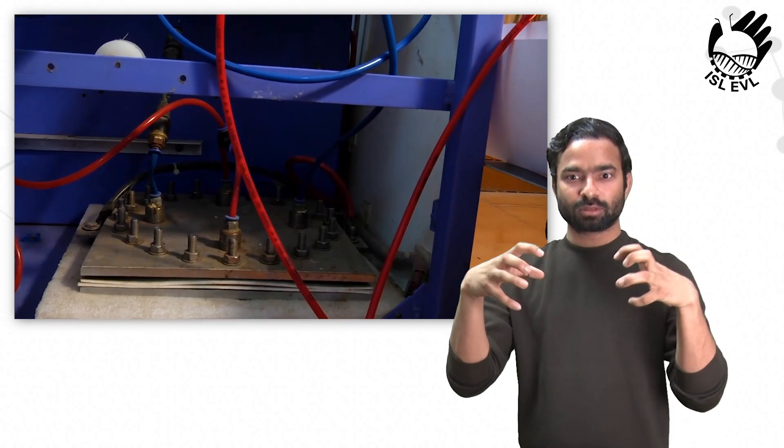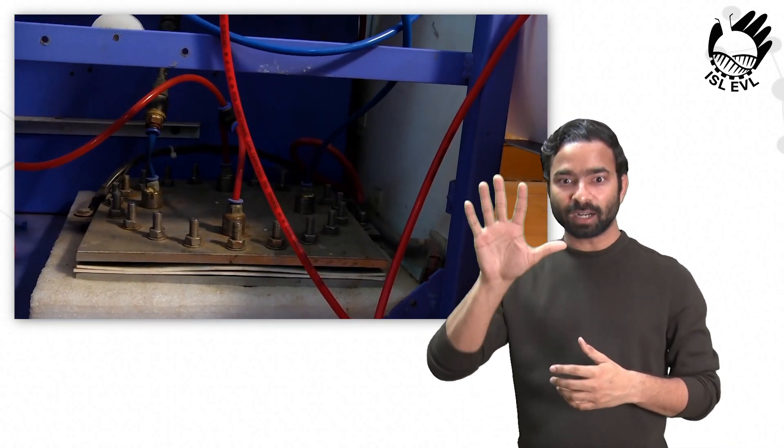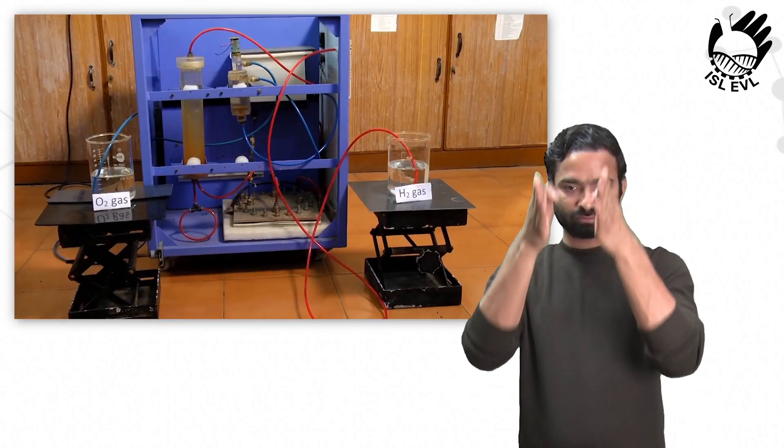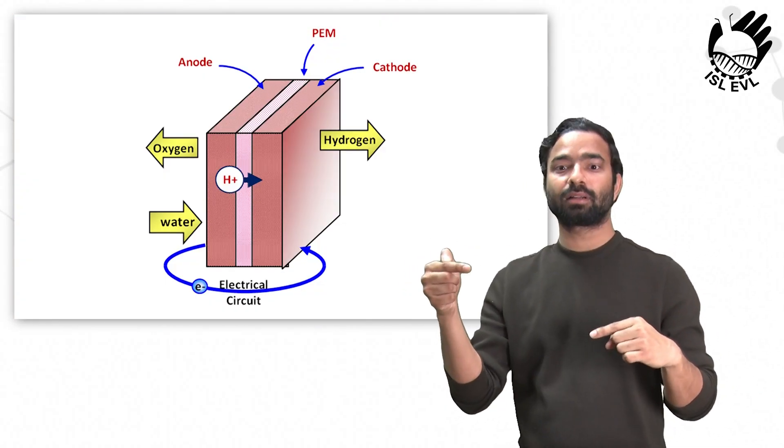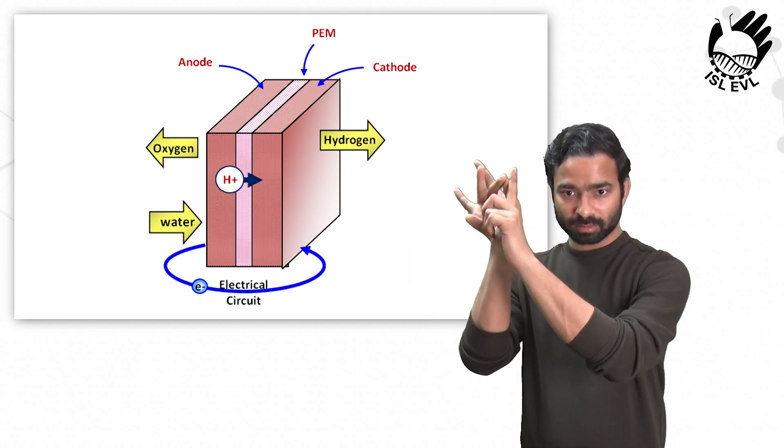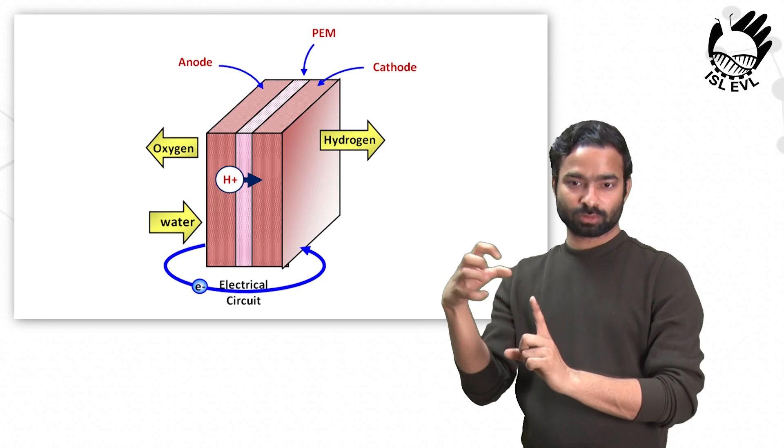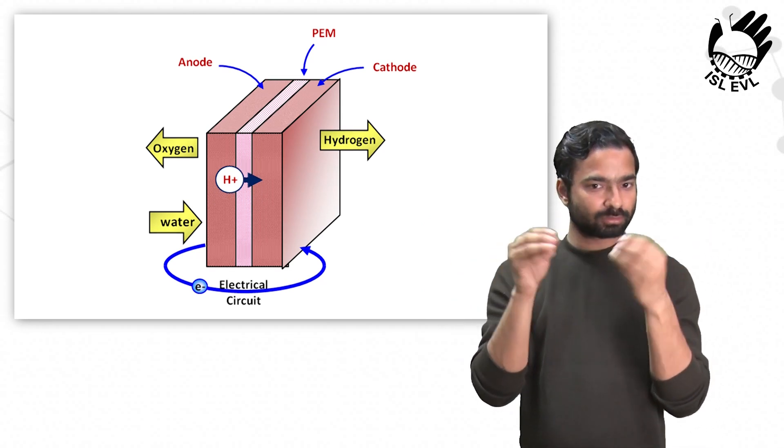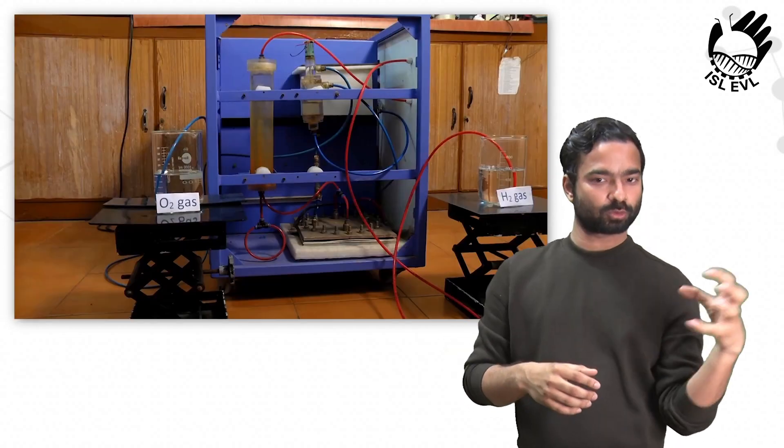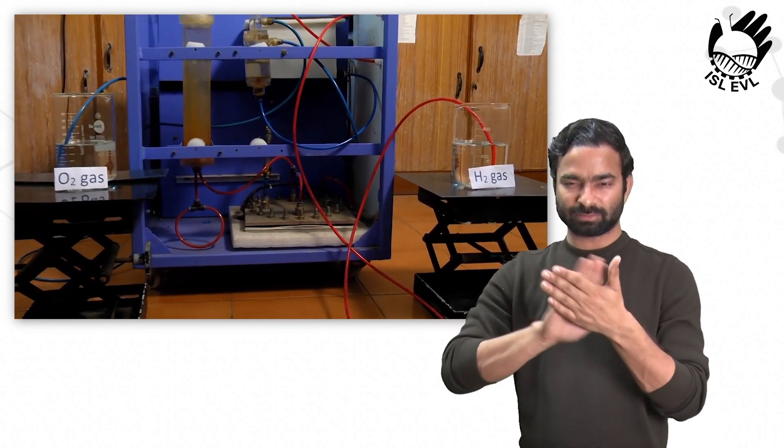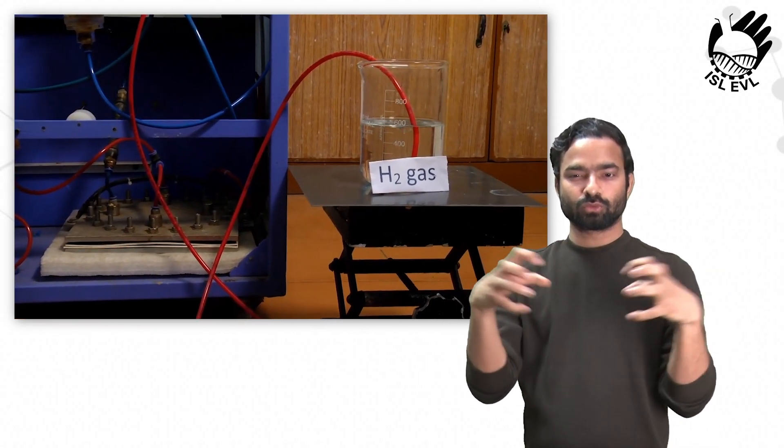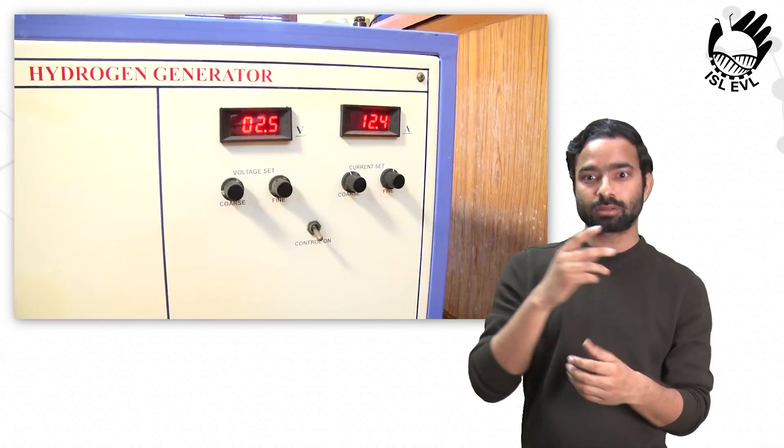Deionized water is pumped to the anode side of the electrolyzer stack. As soon as a voltage of 2.5V is applied, the water splitting reaction occurs at the anode and produces oxygen and protons. These protons are transported across the solid polymer membrane from the anode to the cathode side and produce hydrogen gas at the cathode side. The produced hydrogen and oxygen gases are passed through the scrubbers to absorb the residual moisture and pure gases are collected for various industrial applications.